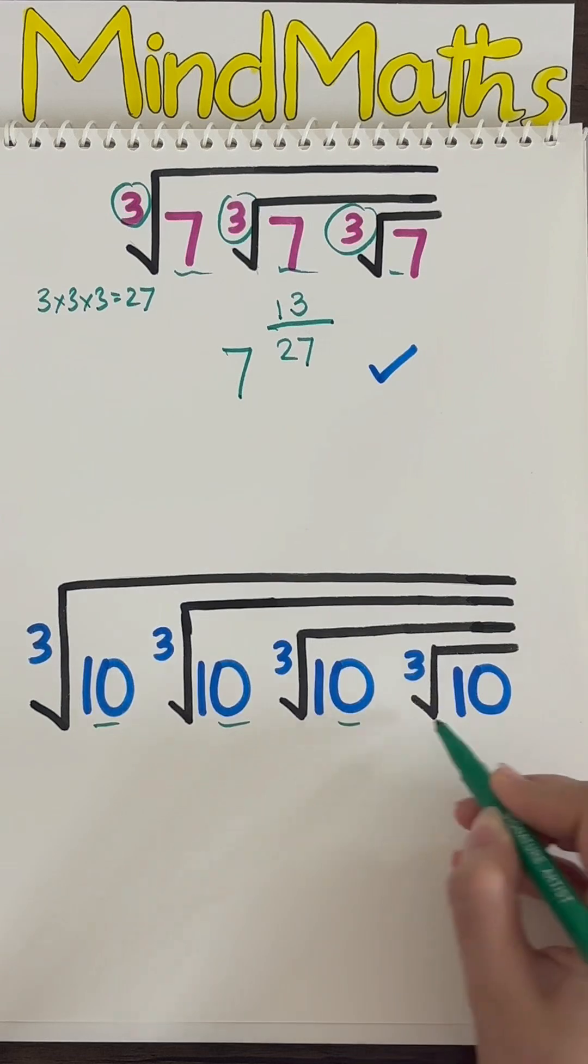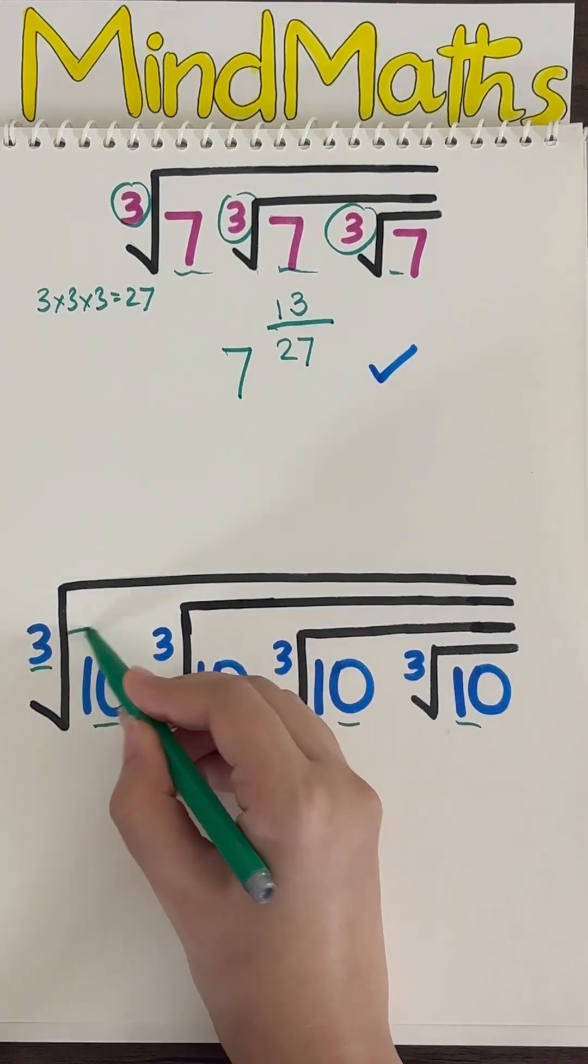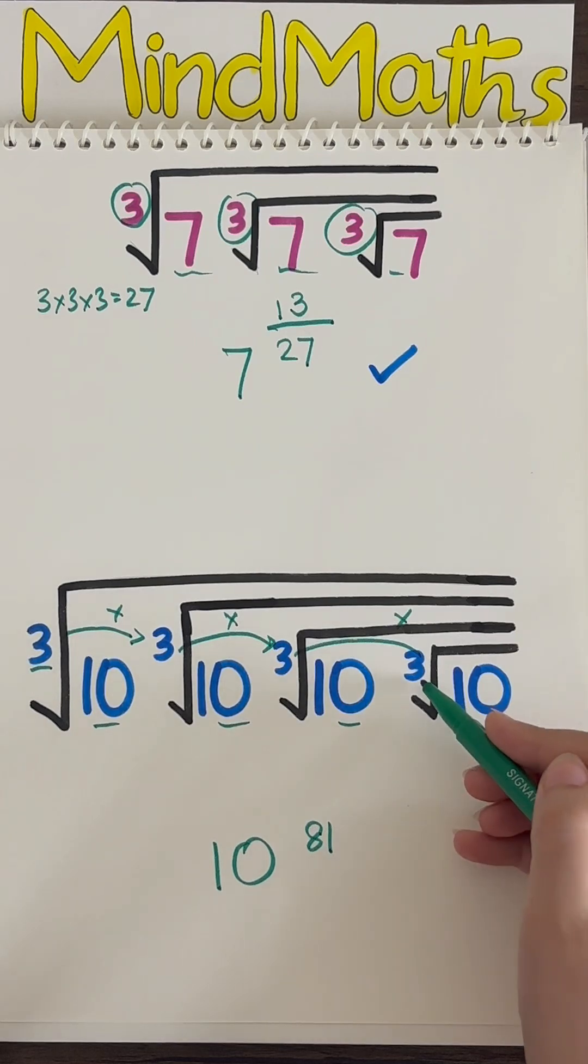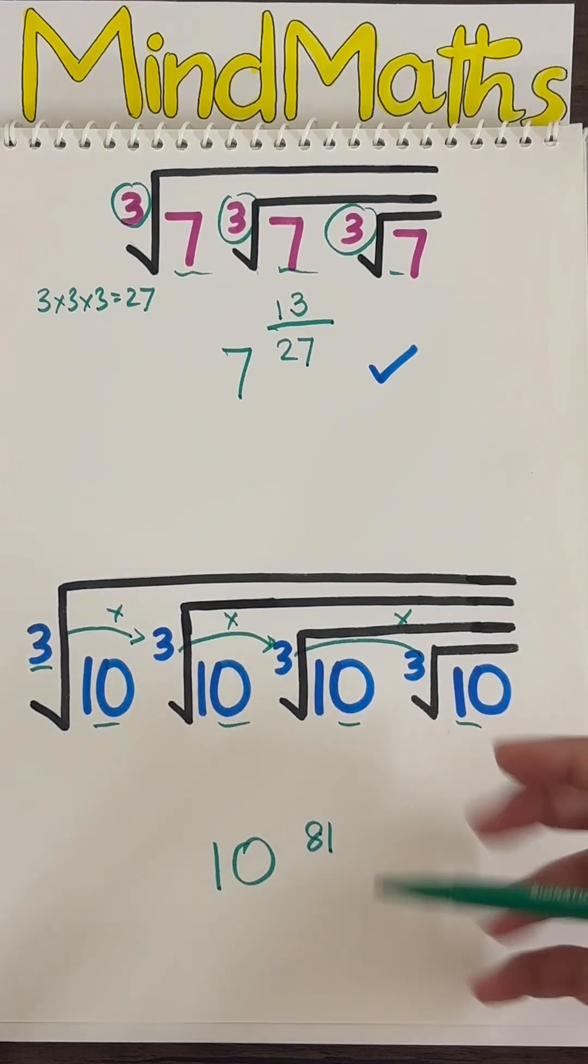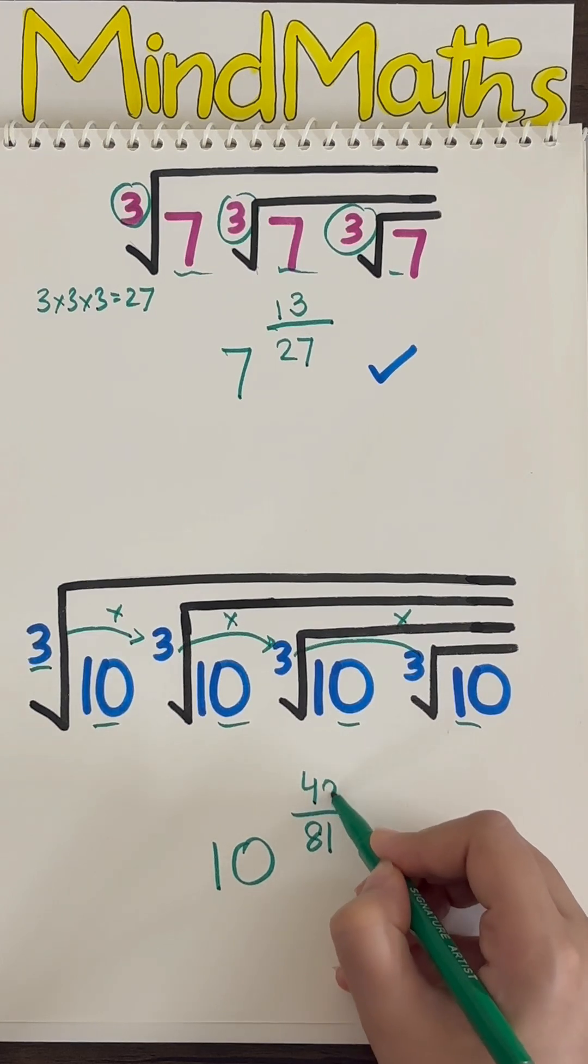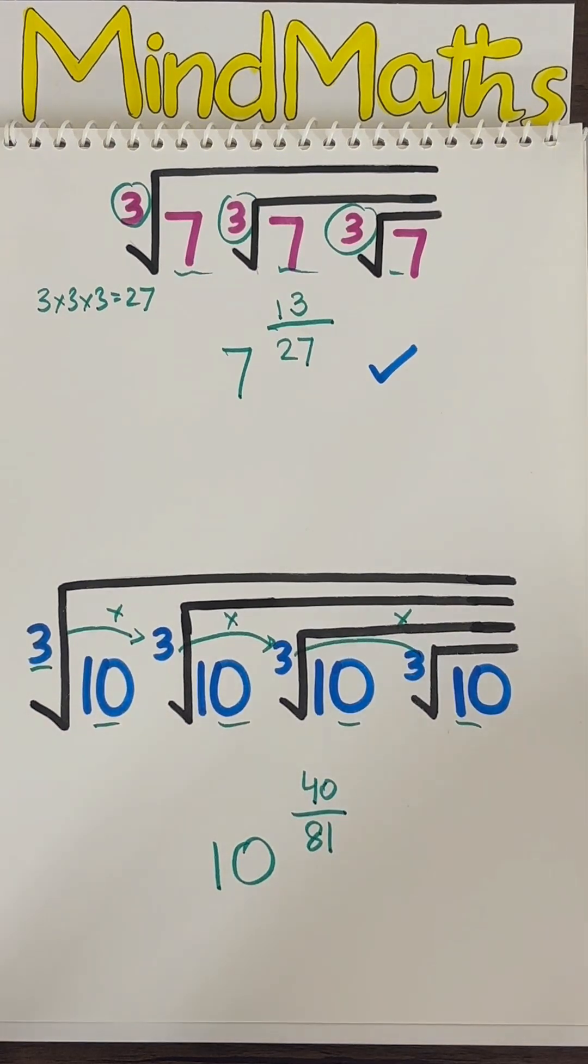Let's do another one, taking radicand 10 common. Then raise it to the 3 4 times, which is 81. As there is 3 in index, so dividing 81 by a number 1 less than 3, which is 2. After dividing, we get 10 raised to power 40 divided by 81, and that's our final answer.